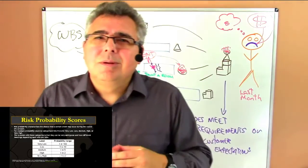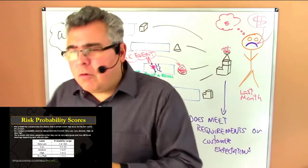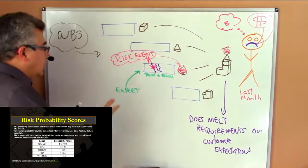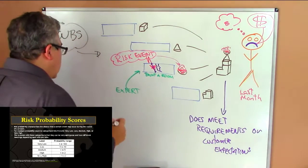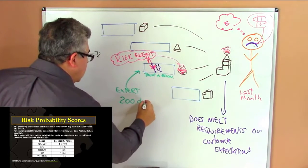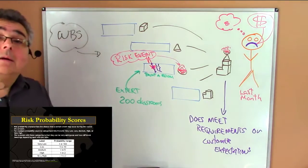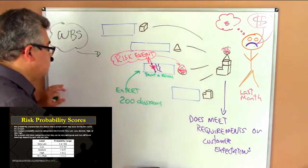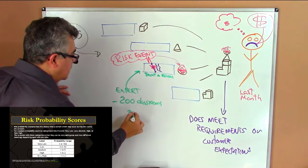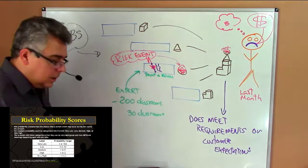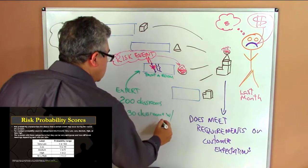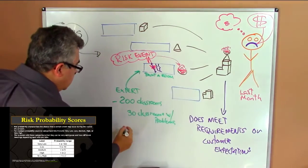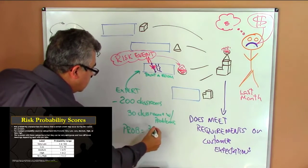You have to go to the second question: try to understand the probability of finding that kind of problem. The way we can do it is to ask the expert — the painter — how many rooms or classrooms have you painted before? He says he painted 200 classrooms in his life. Then you ask: how many problems like this have you found when painting those classrooms? Maybe in 30 classrooms he had problems. That's 30 classrooms with problems out of 200. What is the probability? The probability is 30 divided by 200.